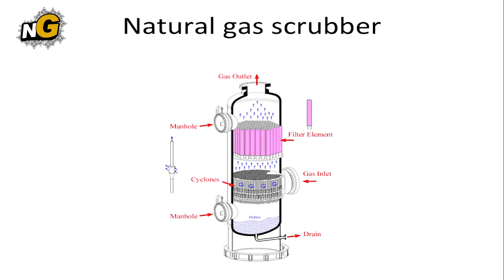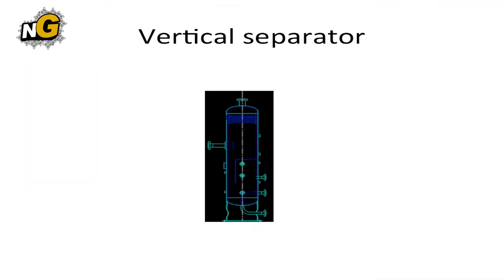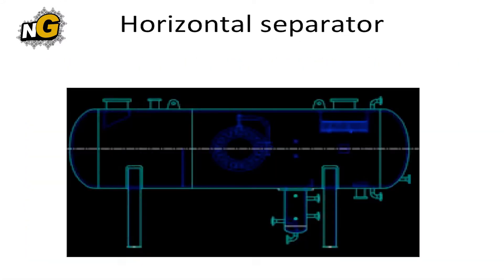For number two, the most basic type of separator is known as a conventional separator, where the force of gravity helps separate the heavier liquid like oil and the lighter gases like natural gas.